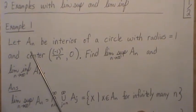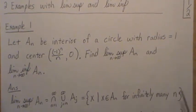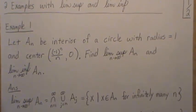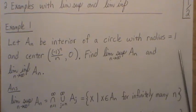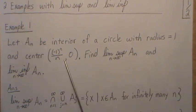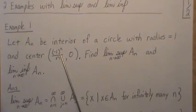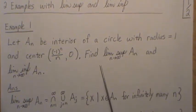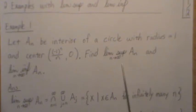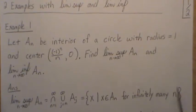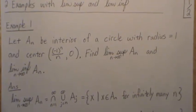In Example 1, we're going to let Aₙ be the interior of a circle with radius 1 centered at the point (-1)^n / n. We want to find the limit supremum of Aₙ and the limit infimum of Aₙ.